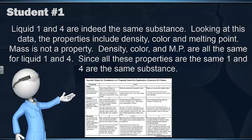Let's look at their evidence. Looking at this data, the properties include density, color, and melting point. Mass is not a property. Density, color, and melting point are all the same for liquid 1 and 4.